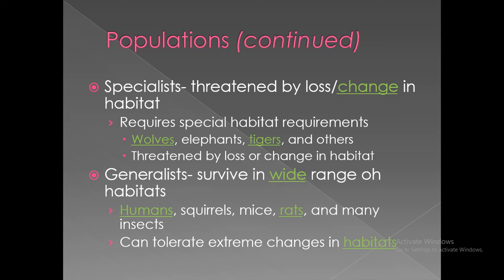Specialists are threatened by the loss or change in their habitat. They require special habitat requirements — examples include wolves, elephants, and tigers. If there is any change in their habitat, they will not survive. Generalists, on the other hand, can survive in a wide range of habitats. Specialists require no change in the habitat; if any change occurs, they cannot survive.